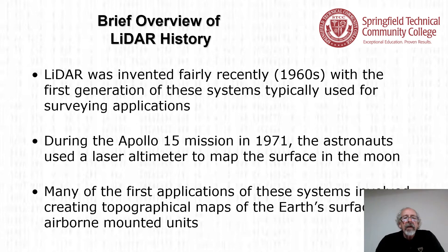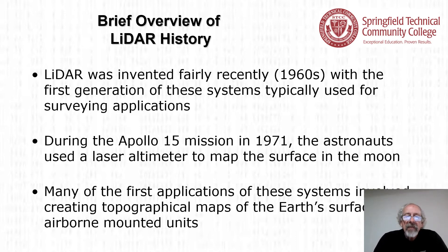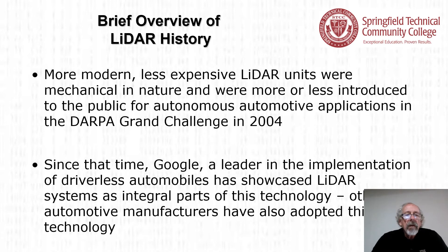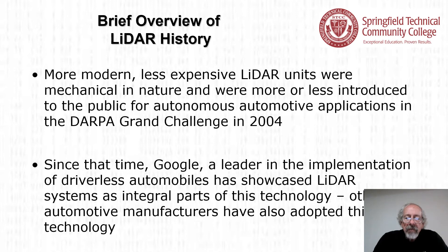LiDAR was invented in the 1960s, with the first generation typically used for surveying applications. During the Apollo 15 mission in 1971, astronauts used a laser altimeter to map the surface of the moon. Many early applications involved creating topographical maps of Earth's surface from airborne units. Less expensive mechanical LiDAR units were introduced to the public for autonomous automotive applications in the DARPA Grand Challenge in 2004. Since then, Google has showcased LiDAR as an integral part of driverless automobile technology, and other automotive manufacturers have also adapted this technology.